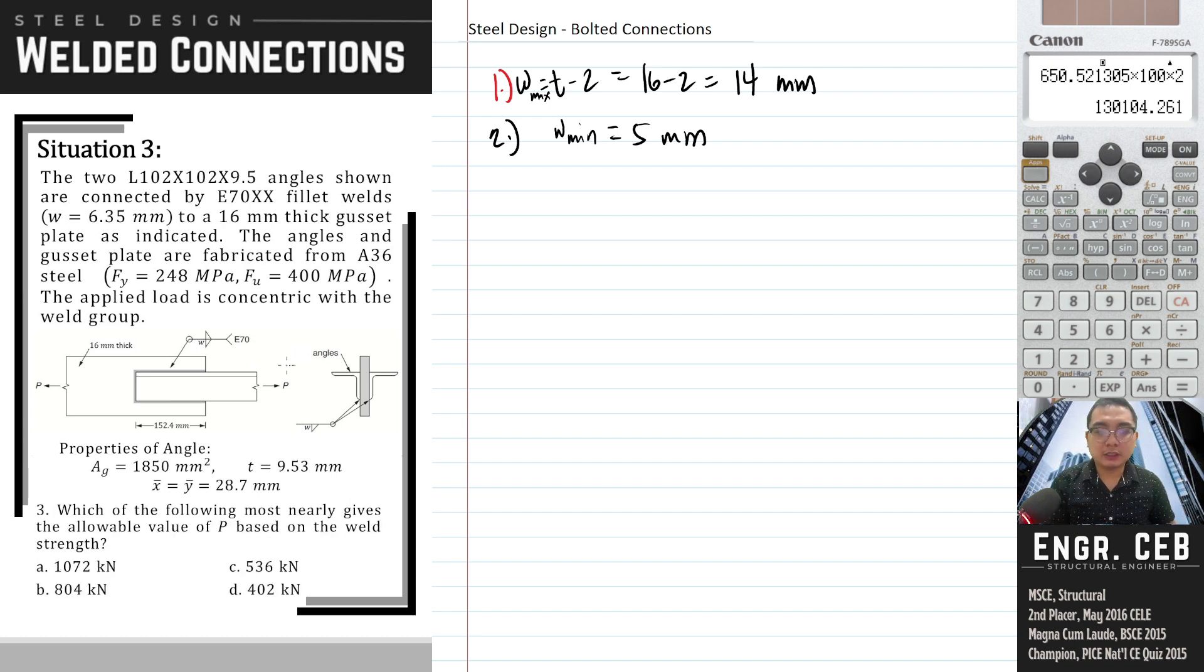Next, which of the following most nearly gives the allowable value of P based on the weld strength? Based on the weld strength, let us compare first the weld strength versus the base metal strength.